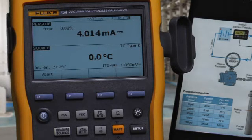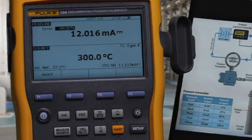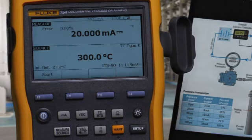First, the 0% value, then the 50% value, then the 100% value, all being recorded to memory for later upload.